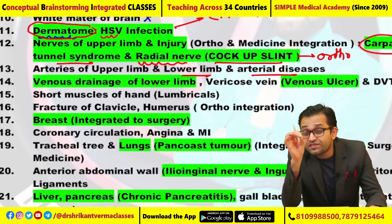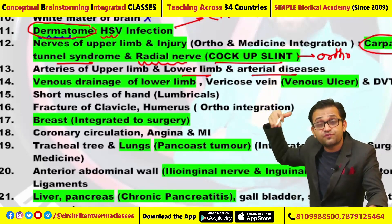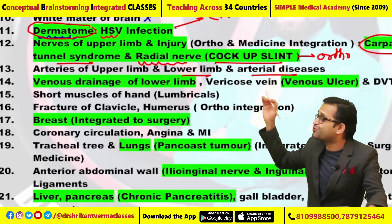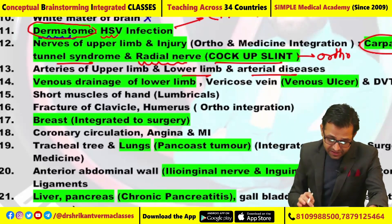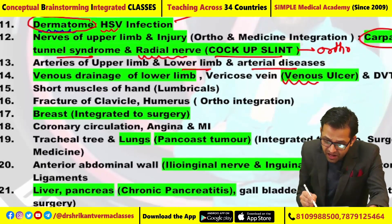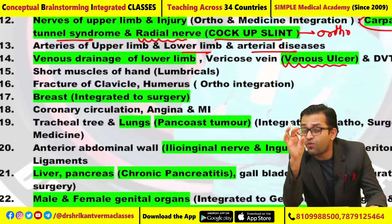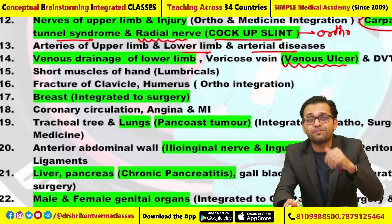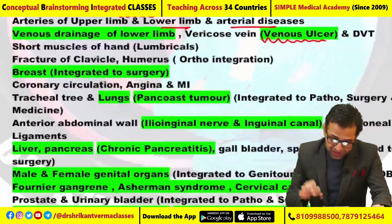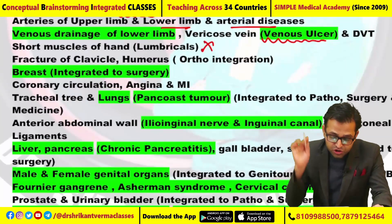These questions from surgery require us to know the arterial and venous drainage of the upper limb as well as lower limb. A question had been asked regarding venous ulcer — some students are saying the ulcer was near the medial malleolus, a few students are saying the ulcer was on the plantar aspect. Integrated with surgery, such questions are asked. This time no question on the lumbricals.